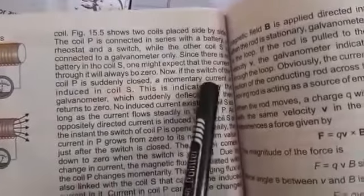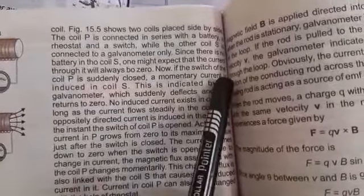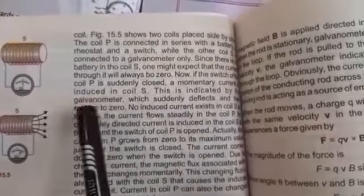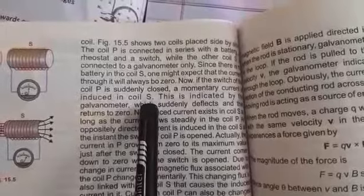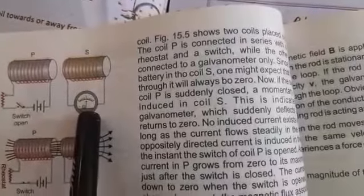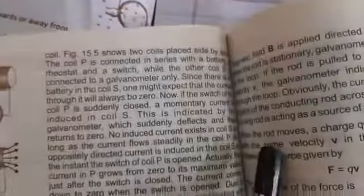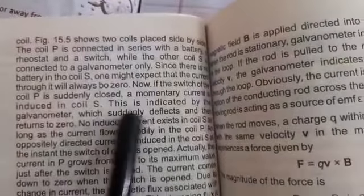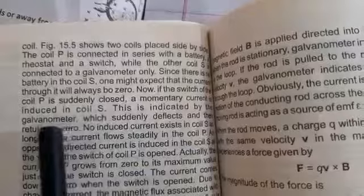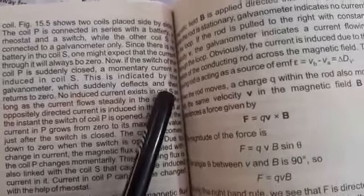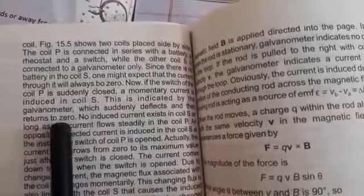Now if the switch of coil P is suddenly closed, a momentary current is induced in coil S. This is indicated by the galvanometer which suddenly deflects and then returns to zero.